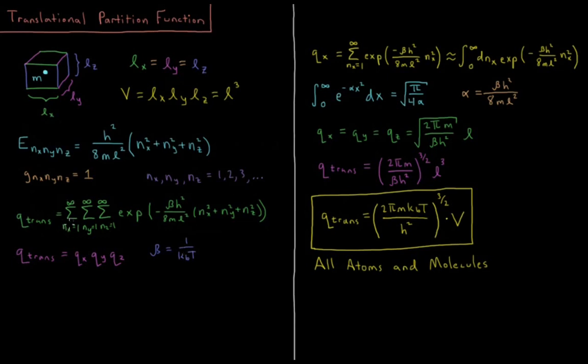This is a rather complicated sum at the moment, but we can actually separate this into a function of x, a function of y, and a function of z. Our translational partition function is going to be the product of the partition functions in each individual dimension, x, y, and z.